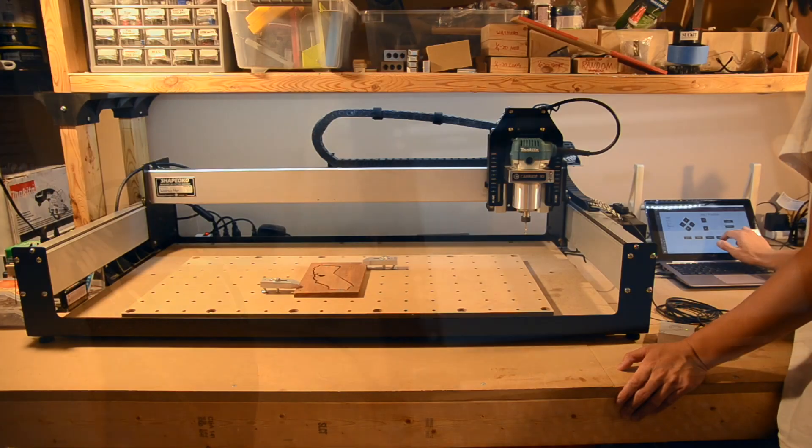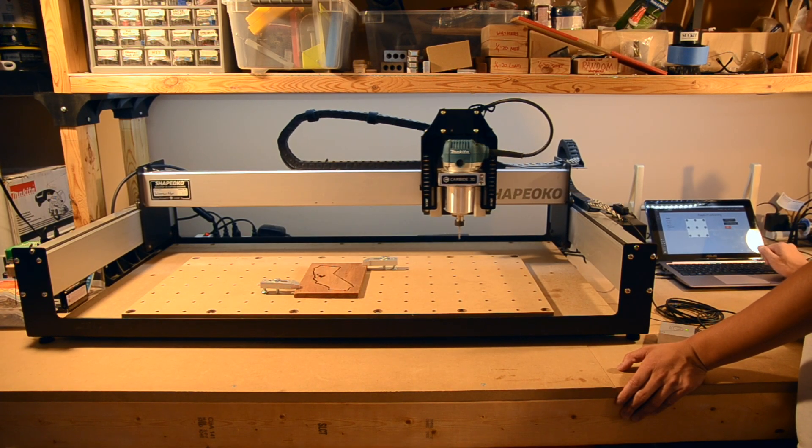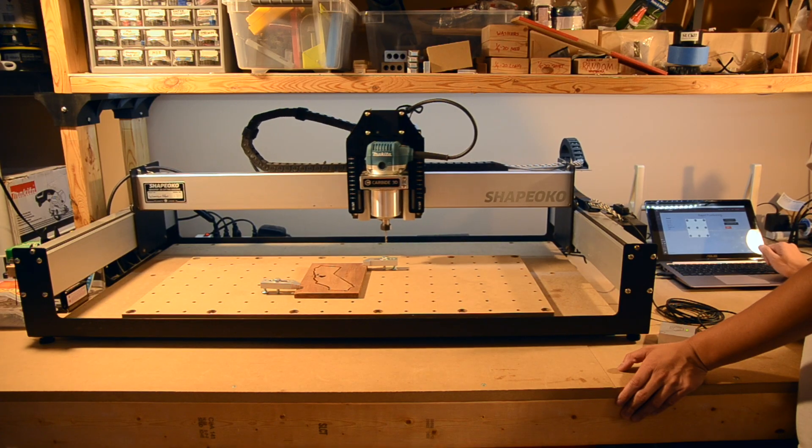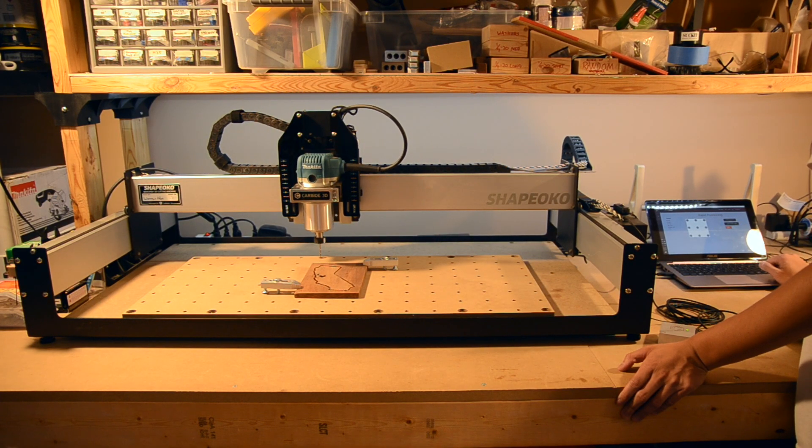Put all of these things together and you get a machine that can precisely and repeatably carve out a part with the spindle. In the case of the Shapeoko, the spindle is typically a compact router. If you swapped out the spindle for an extruder, this would be a 3D printer.